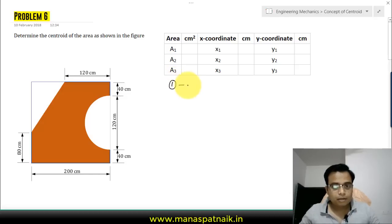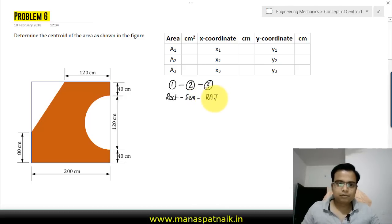You also need to subtract a right angled triangle. A rectangle minus a semicircle and also a right angle triangle. Let me mark this: semicircle is marked by 2 and the triangle is marked by 3.